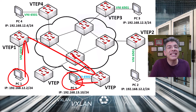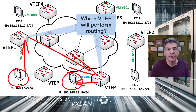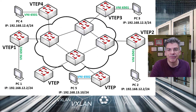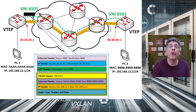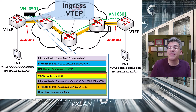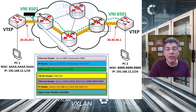To discuss this issue, we first have to define two terms: the ingress VTEP and the egress VTEP. The ingress VTEP is defined as the starting point of a VXLAN tunnel, where a packet enters the VXLAN overlay. The ingress VTEP encapsulates the Ethernet frame into a VXLAN header and forwards it into the VXLAN network.